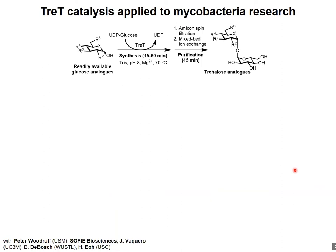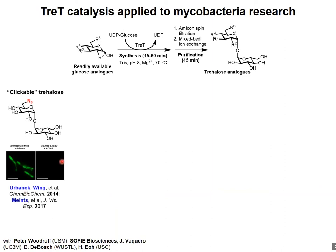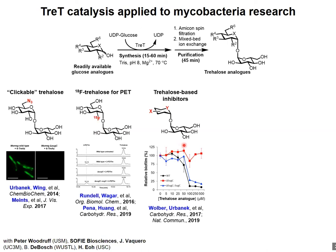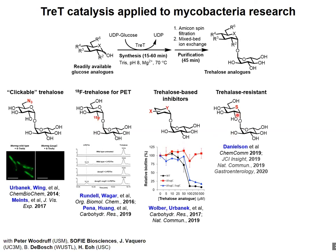This method, originally developed by two undergraduate students in my group, Bailey Urbanick and Doug Wing, has since been used to obtain and apply various types of trehalose analogs in mycobacteria research. We've developed multiple clickable trehalose analogs for imaging mycobacteria, synthesized a radioactive fluorine-18 modified trehalose as a possible PET imaging probe for visualizing mycobacterial infections in vivo, developed trehalose-based inhibitors that block mycobacterial biofilm formation, and trehalose-resistant analogs that resist hydrolysis by enzymes that degrade trehalose.